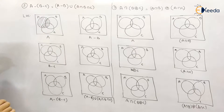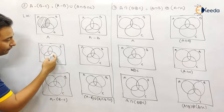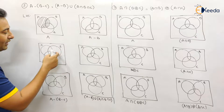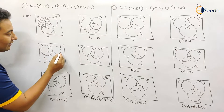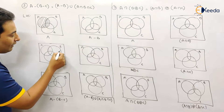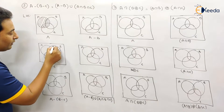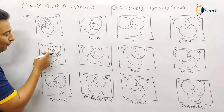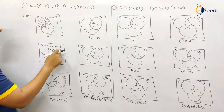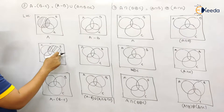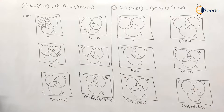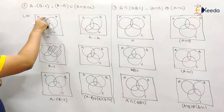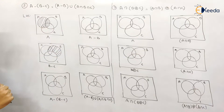B minus C — this is my B. Initially the entire B is selected and from B I am going to subtract C, therefore I will be left with this particular part. Because initially this part was also there as a part of B, but we subtracted C, therefore this is the result B minus C. And what is next? A minus (B minus C).